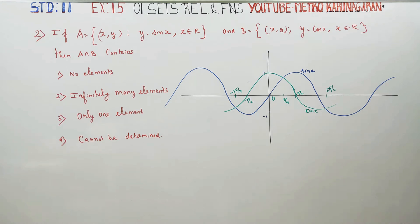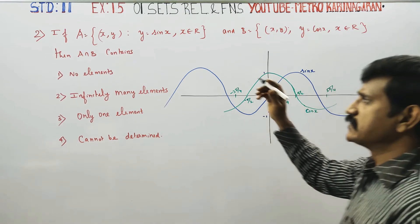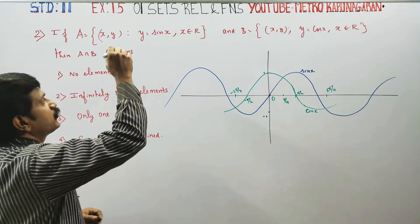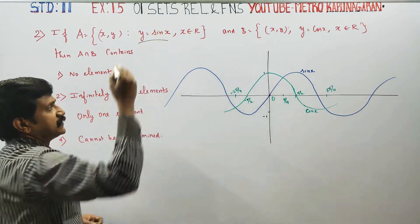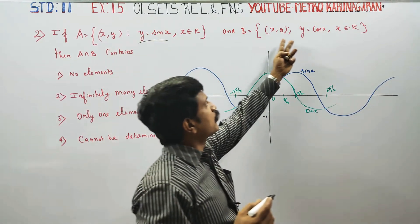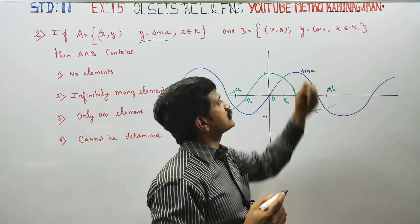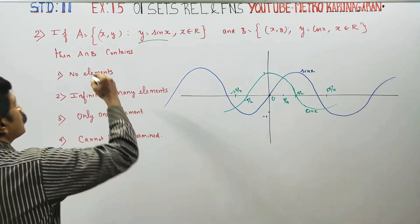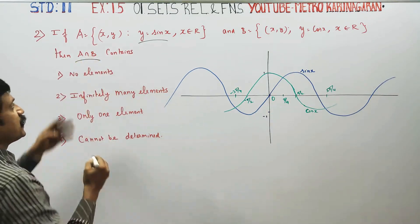Dear 11th standard students, in exercise 1.5, sum number 2: A is a set of ordered pairs formed by the graph y = sin x, and B is also a set of ordered pairs formed by the graph y = cos x. What is A intersection B?